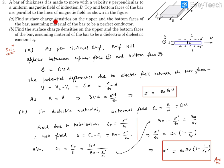There are two questions. Part (a): find surface charge densities on the upper and bottom faces of the bar, assuming the material to be a perfect conductor. Part (b): find the same thing, but assuming the bar is made of a dielectric material with dielectric constant εᵣ. Let's solve the first part first.